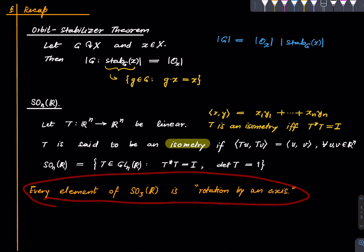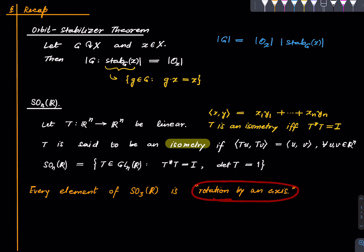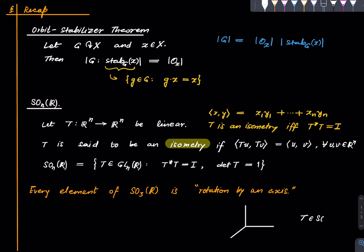Here is a key theorem from linear algebra: every element of SO(3,R) is a rotation about an axis. This is called Euler's theorem. Suppose T is in SO(3,R); then there is an axis (drawn in orange) and some angle θ such that rotating the entire space about this axis by angle θ agrees with T. So every element of SO(3,R) is actually a rotation, which is exactly what SO(n,R) is supposed to capture.